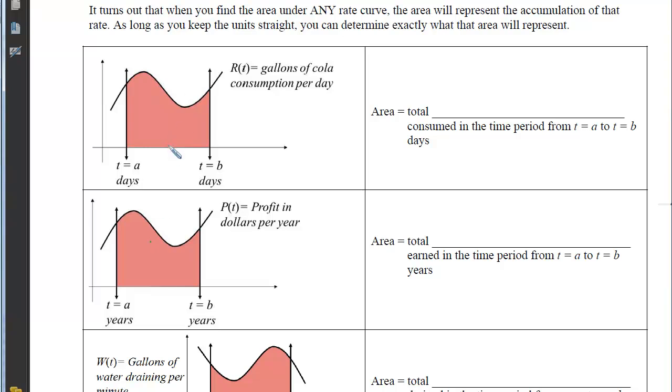For example, let's relabel that picture, and instead of having this be the velocity, let's call it R(t), and let it represent the gallons of cola consumed per day. If we now accumulate from A to B, and we think about what each of those rectangles will represent, we can see that the width of that rectangle will be measured in days, and the height of that rectangle will be measured in gallons of cola per day. So if I multiply days by gallons per day, I'm going to end up with a total number of gallons of cola that are consumed in that time period from t equals a to t equals b.